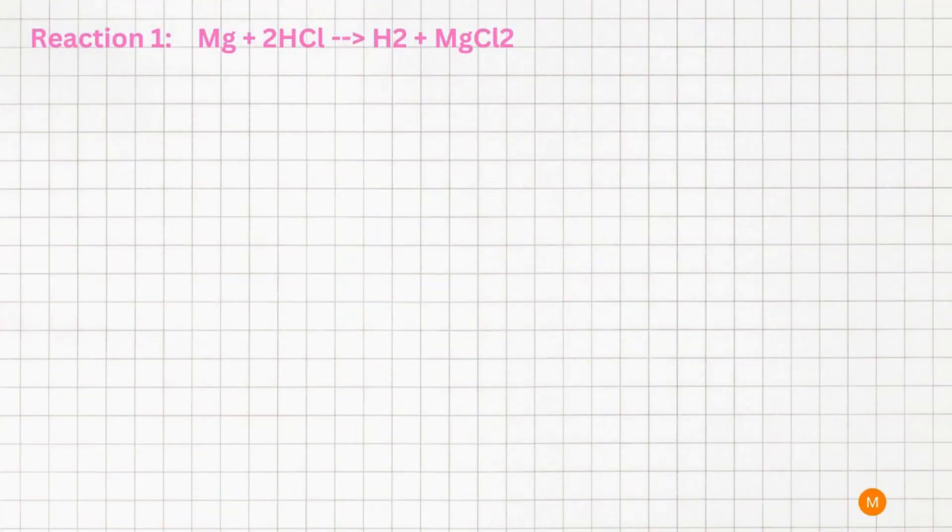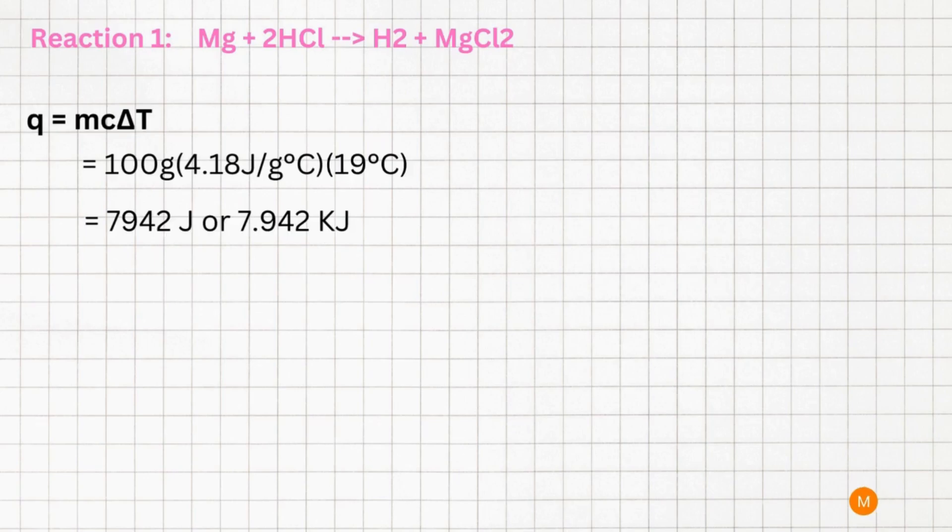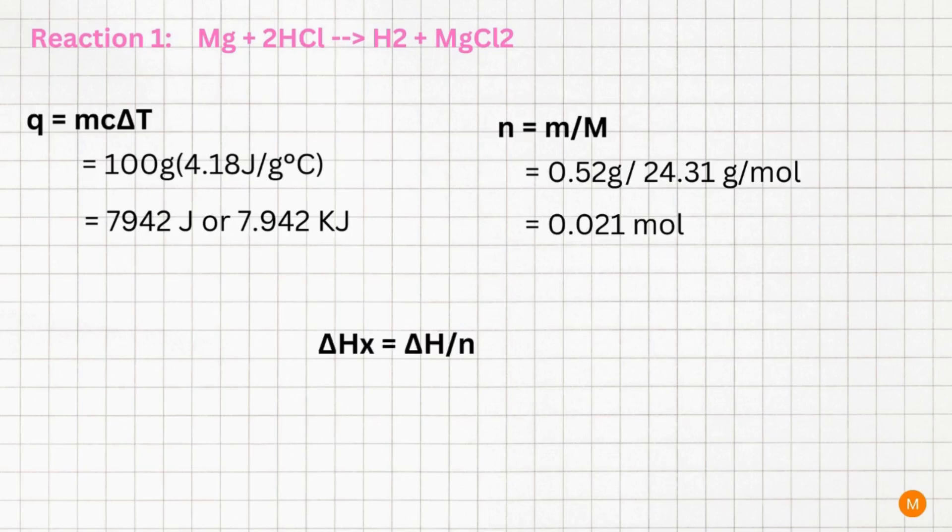Now we can use the change in temperature we recorded in our lab to determine the molar enthalpy of each of the reactions. Looking at our first reaction, we do this by first calculating our heat energy, or Q value, using the equation Q equals MC delta T. We sub in our mass of hydrochloric acid, which is 100 grams, our heat capacity, which is 4.18 joules per gram degrees Celsius, and our change in temperature, which we recorded in our lab to be 19 degrees Celsius. We must then solve for our number of moles using the equation n equals small m over big M. We sub in our mass of magnesium metal, 0.52 grams, and our molar mass, 24.31 grams per mole. This will equal 0.021 moles. Now we can solve for our molar enthalpy by using the equation delta Hx equals delta H over n. Our delta H value is equal to negative Q and is therefore negative 7.942 kilojoules. We divide this by our moles and get an answer of negative 378.2 kilojoules per mole.